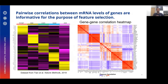However, when we analyzed a cell line dataset from Tian et al., we found that the top marker genes of a cell type tend to be strongly correlated with each other, as demonstrated in the gene-gene correlation heatmap on the right, while the top marker genes of different cell types tend to be negatively correlated with each other.